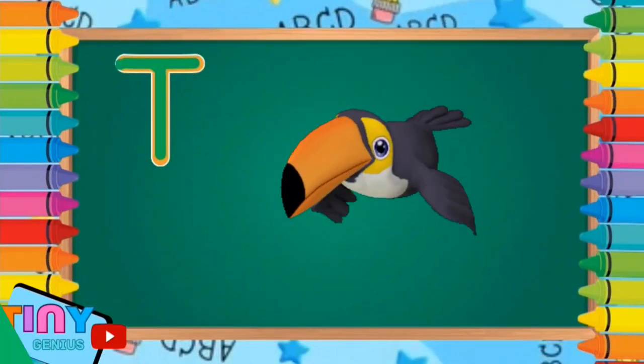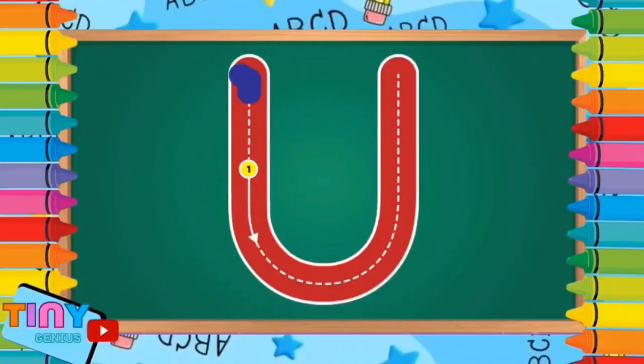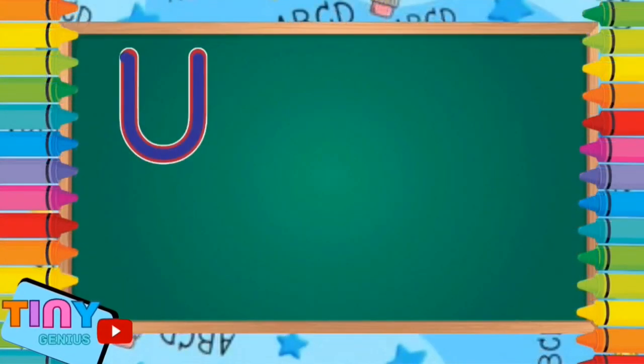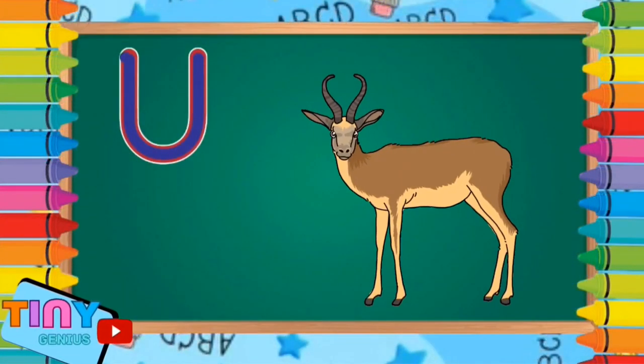Let's move on to the next letter, the letter U. Pull down, around and up. U is for urial.